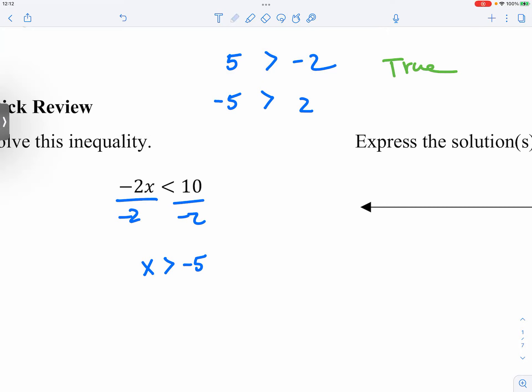False statement, right? So this is total nonsense. Negative 5 is not bigger than 2. So in order to keep the statement true, what should we do? That's the reason why we flip the sign. Because if not, there's no true relationship here.